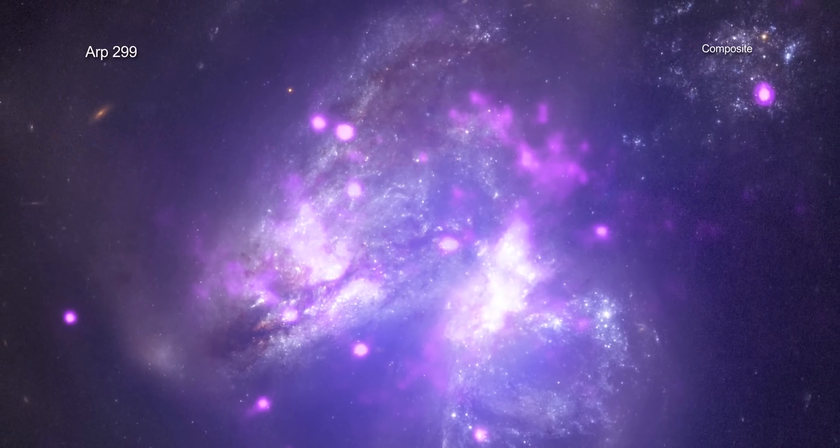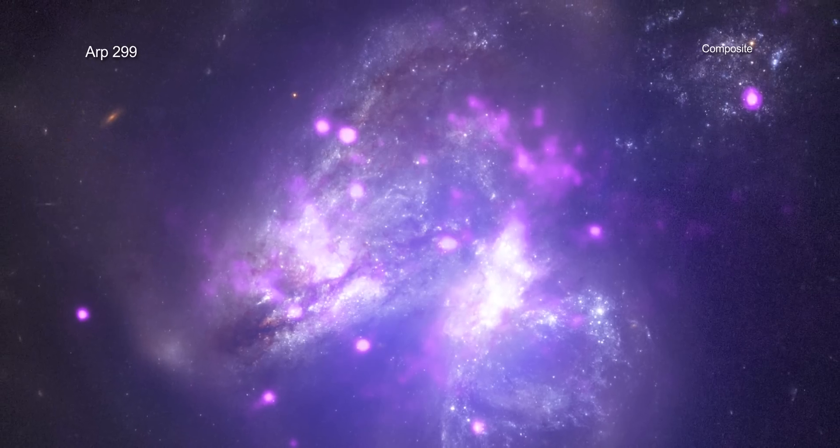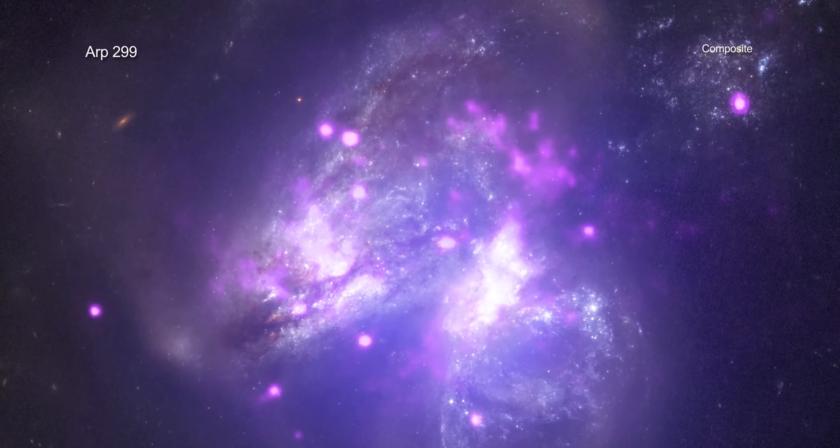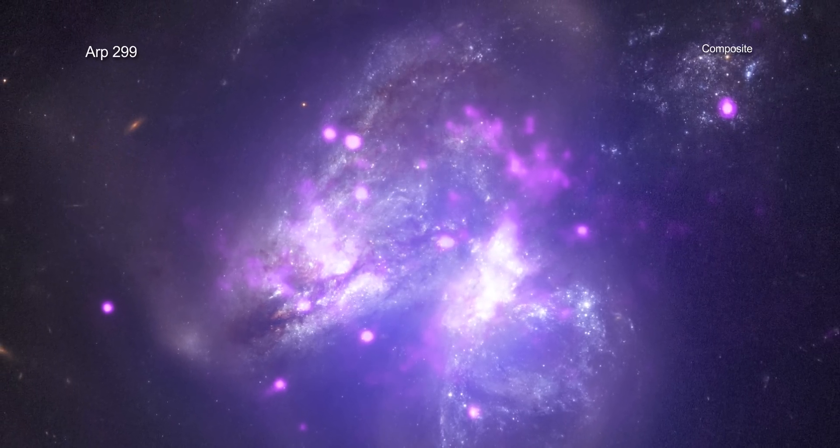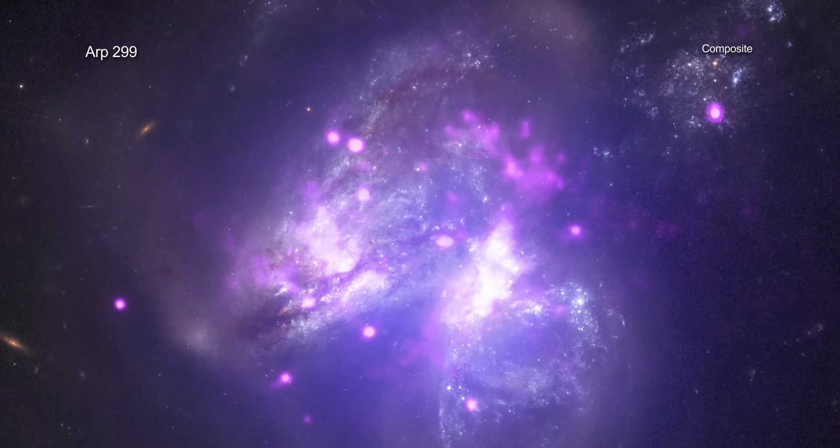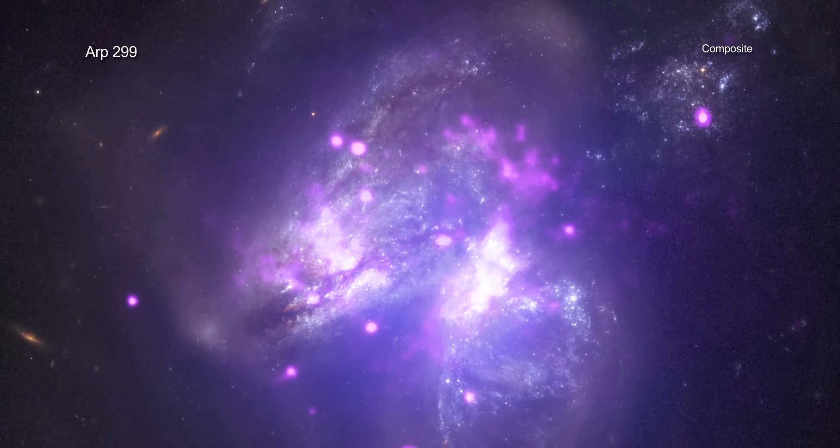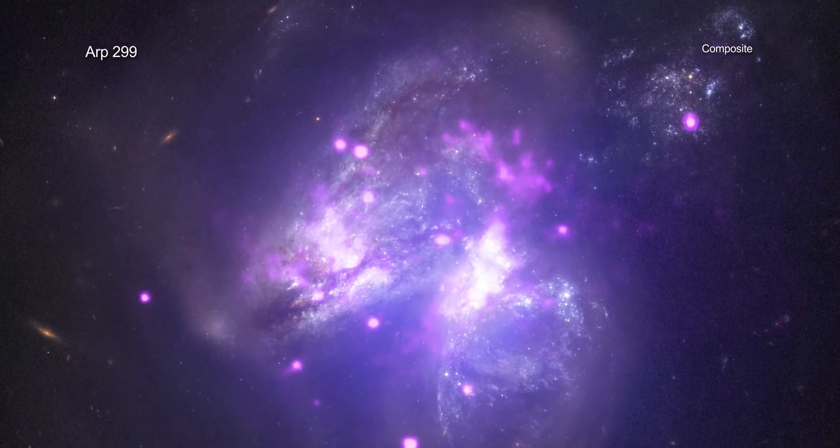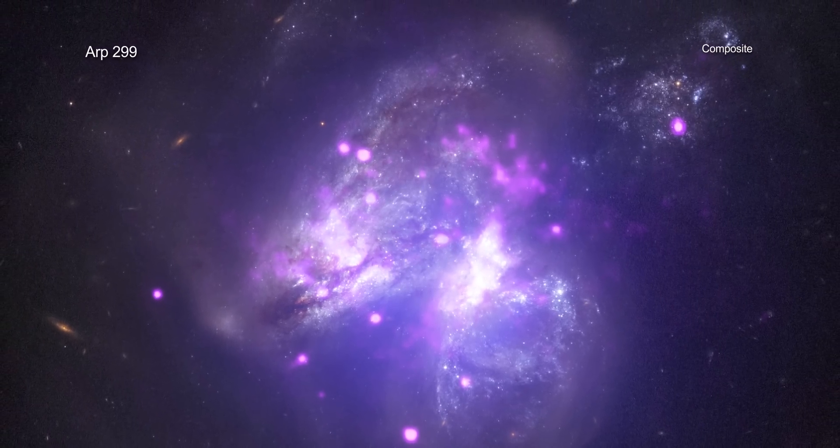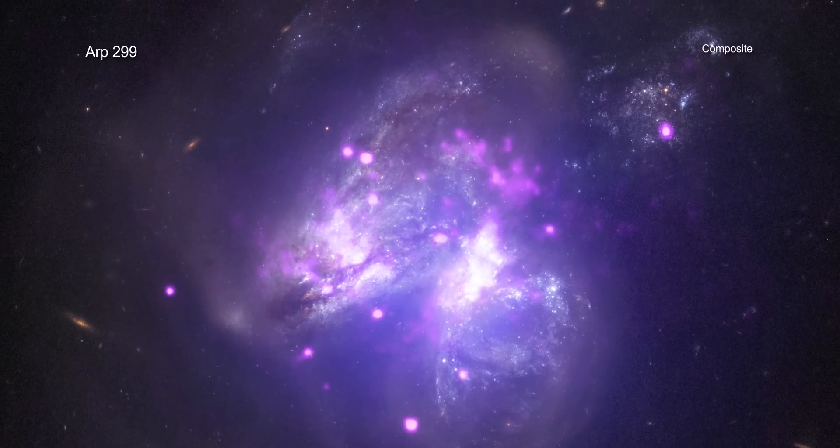While ARP 299 is intriguing itself, this system also has similarities to more distant galaxies. This gives astronomers a chance to sample a local version of far-away cosmic creations, providing hints to the ingredients and recipe that created them.